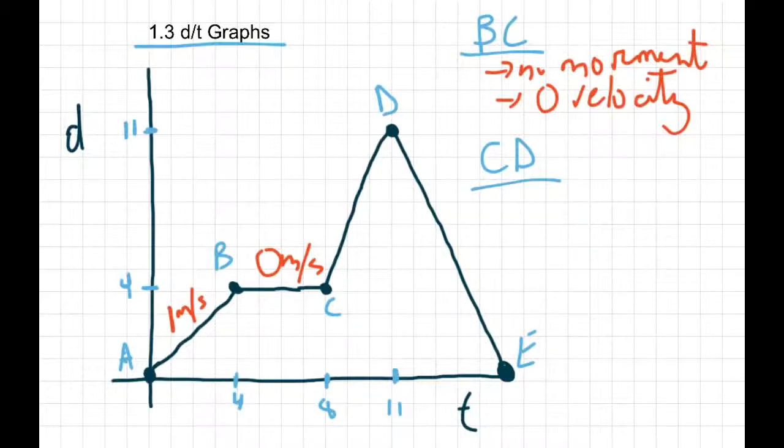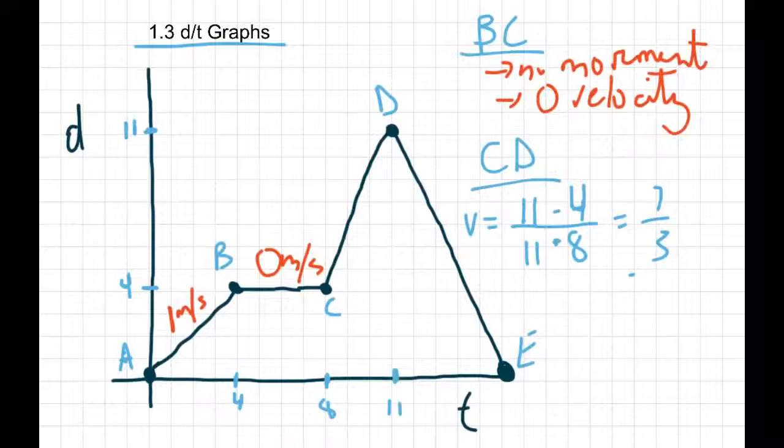So if we do our slope calculation for that one, our rise would be from final to initial would be 11 minus 4. And our time is 11 minus 8. So we get 7 over 3, which would be approximately 2.3 meters per second.